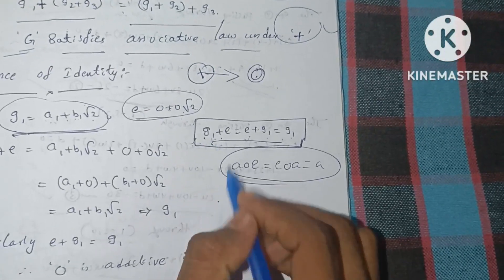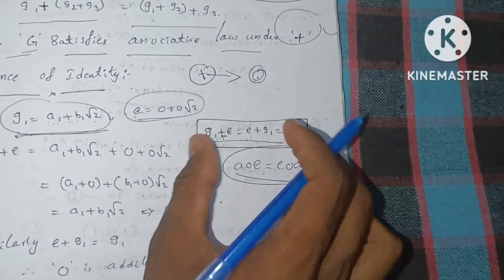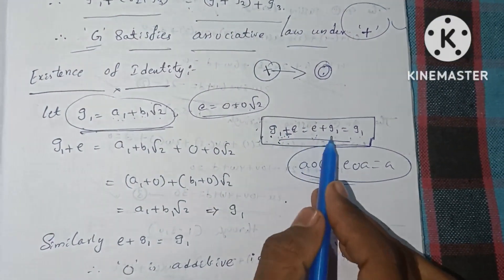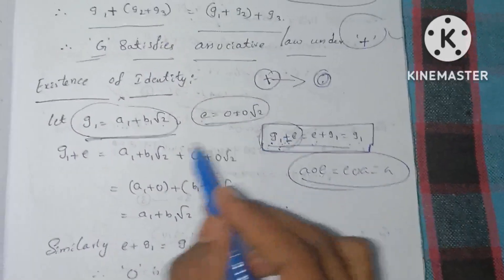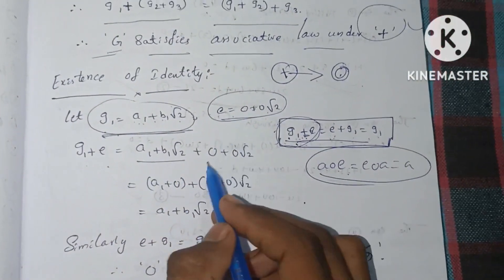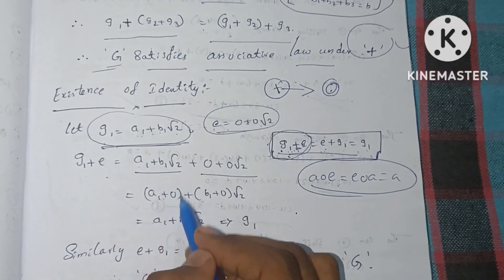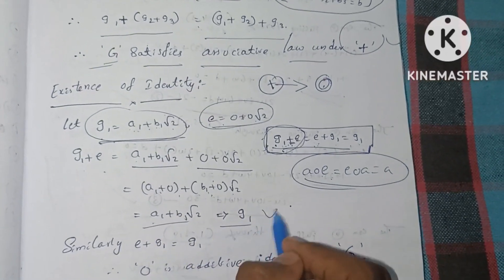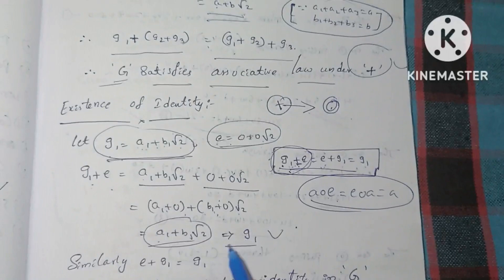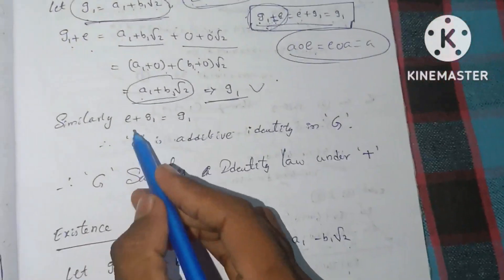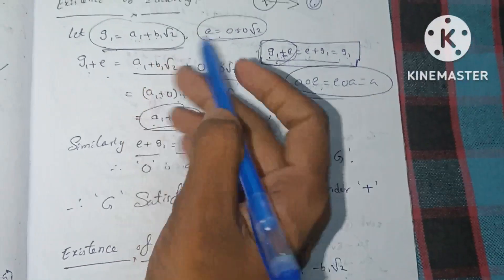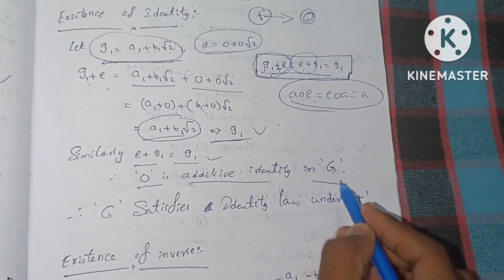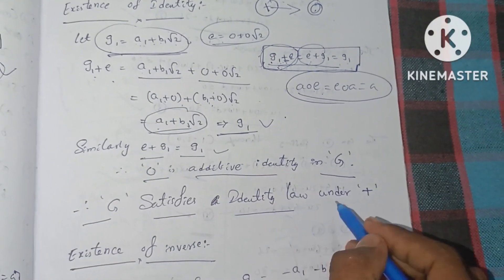For the identity law, we need g1 plus E equal to E plus g1 equal to g1. Taking E equal to 0 plus 0 root 2, we compute g1 plus E: a1 plus 0 plus b1 plus 0 times root 2, which equals a1 plus b1 root 2, which equals g1. Similarly, E plus g1 equals g1. Therefore, 0 is the additive identity in G, and G satisfies the identity law under binary operation.